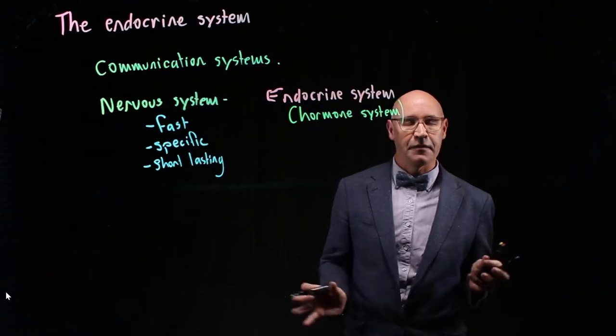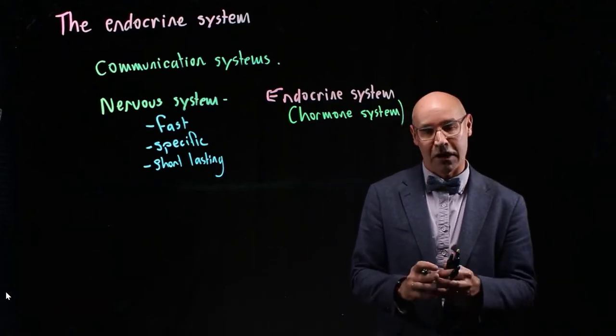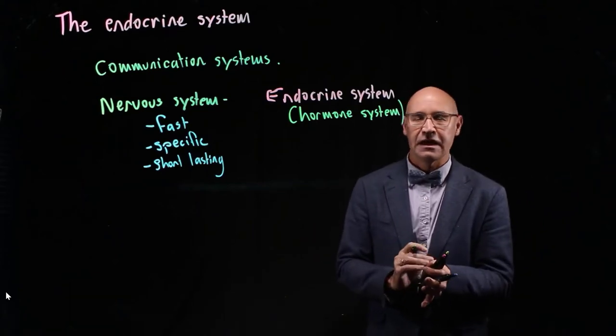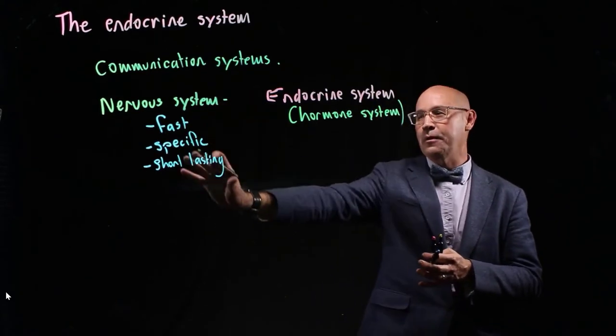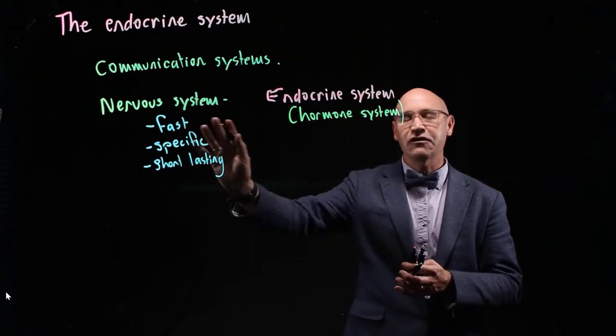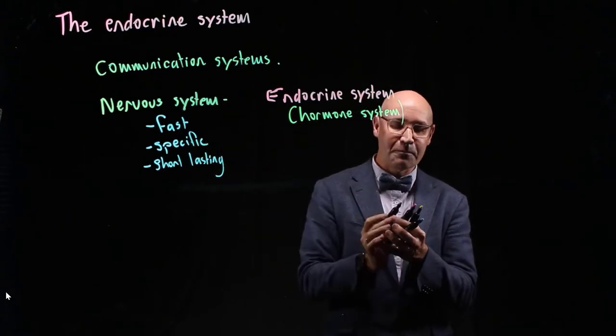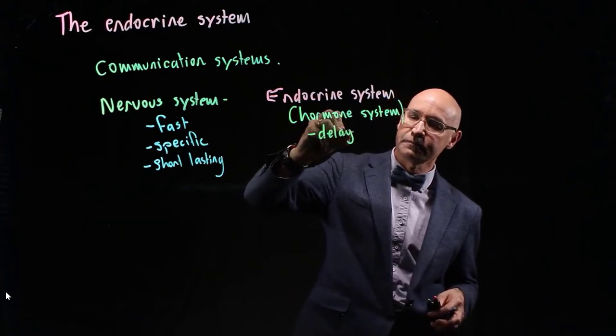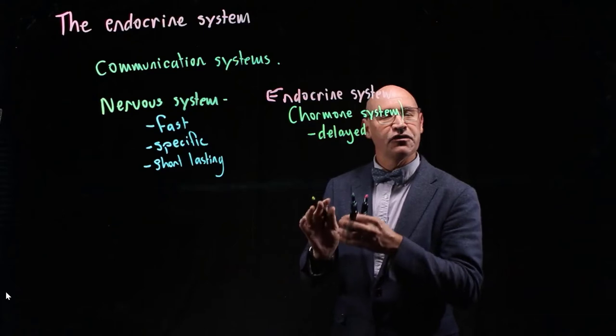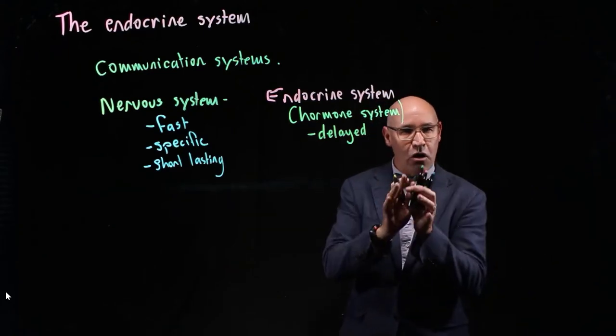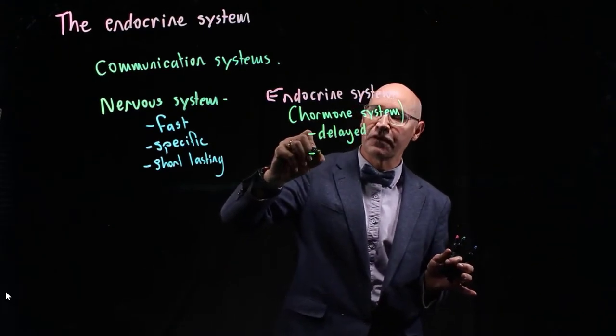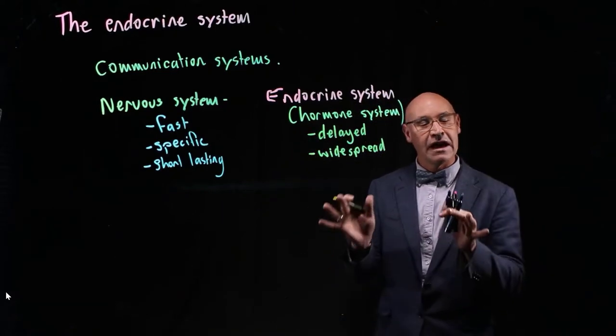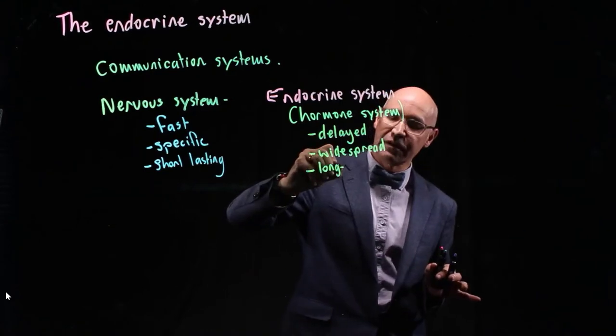We have many different types of hormones, and I'm only going to tell you about a few of them. But the thing with the hormone system is that it's really the opposite to the nervous system in many ways. It's not as fast, so it's much more delayed in its response. It's not as specific, it's more widespread in terms of its effect. And finally, it tends to last longer in terms of the effect.